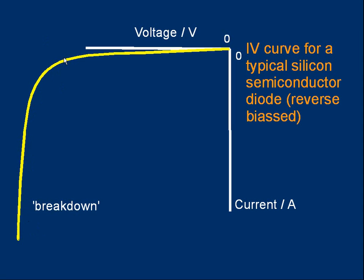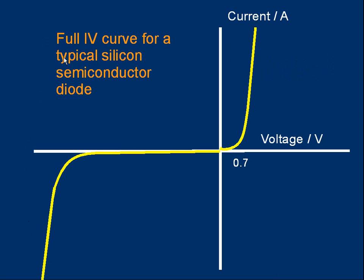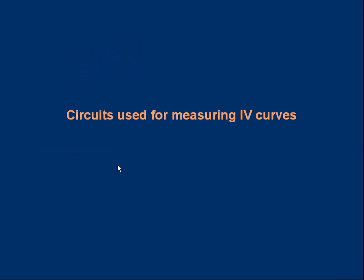If we put the two graphs together, the forward biased and the reverse bias graphs, it looks something like this. And if you're a student, you need to know this graph.